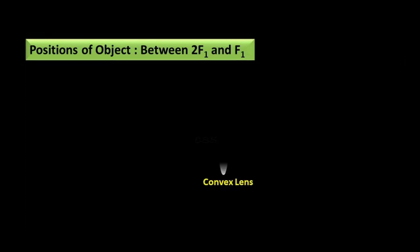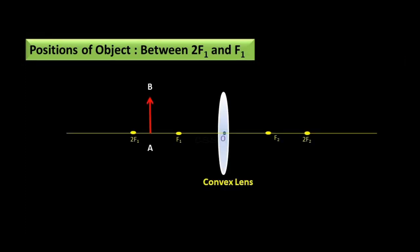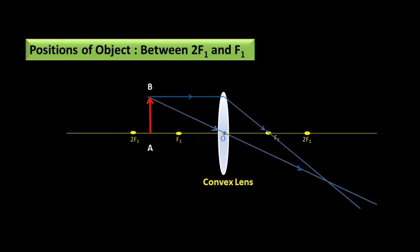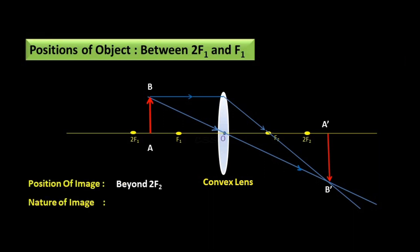Another position — object between 2F1 and F1. AB is the object between 2F1 and F1. The incident ray coming from object AB is parallel to the principal axis and passes through focus F2 as per rule. Another incident ray passes through the optical center without any deviation. Image forms at A'B' beyond 2F2. Position of image: beyond 2F2. Nature of image: real and inverted. Size of image: magnified.